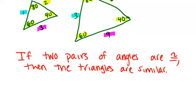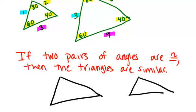So for example, if we had these two triangles, and all we know is that this angle is 85 degrees in each triangle, and this angle over here is 40 degrees, then these two triangles must be similar by AA similarity.